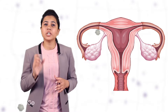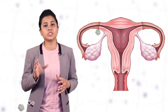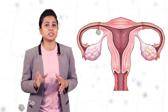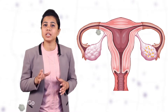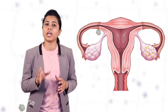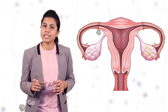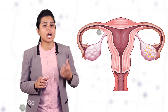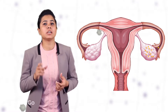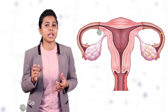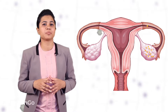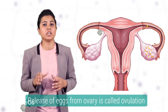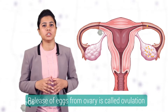We know now that the girl which is born, her ovary already consists of many immature eggs or ova. On reaching puberty, some of these eggs start maturing and these eggs are released from the ovary. This release of eggs from the ovary is called as ovulation.